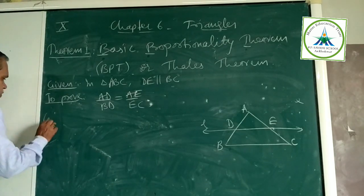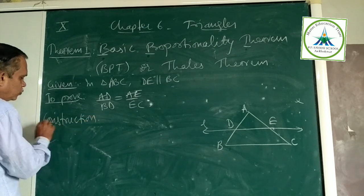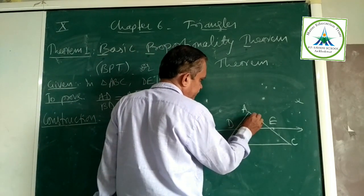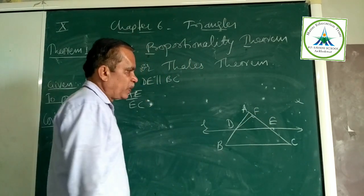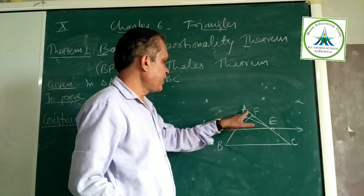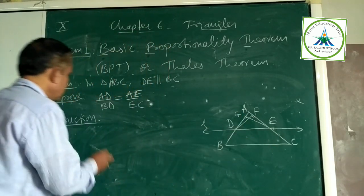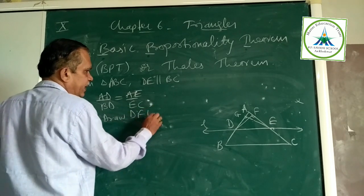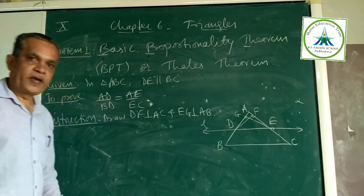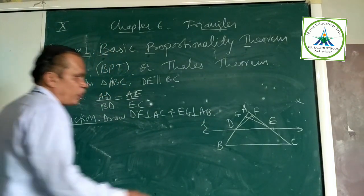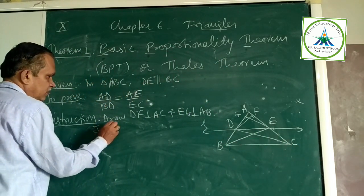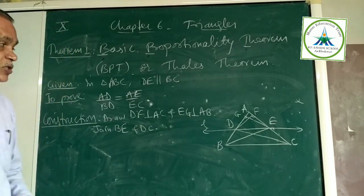Construction. For proof, we need to do some constructions. Look here. I am drawing perpendicular from E to AB, that is EG. And draw DF perpendicular to AC. Draw DF perpendicular AC and EG perpendicular AB. And join DE and DC.